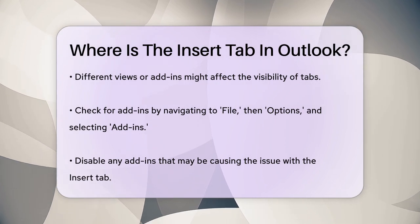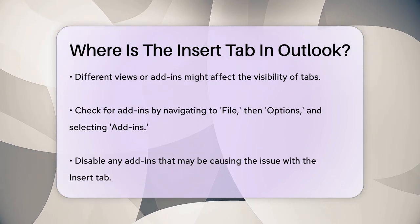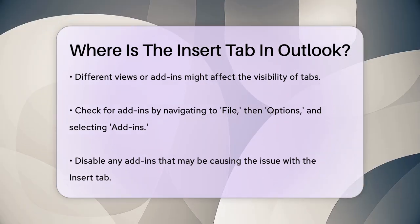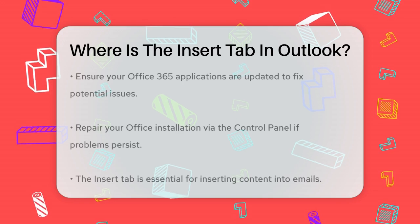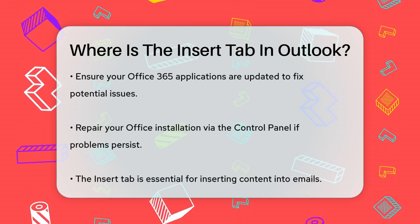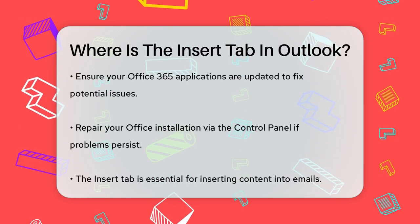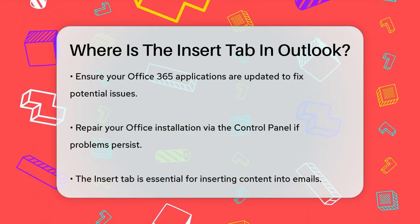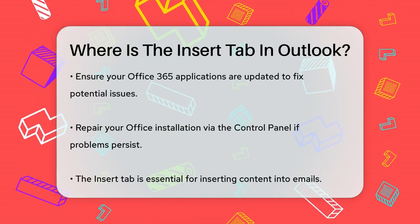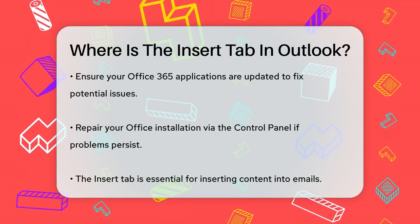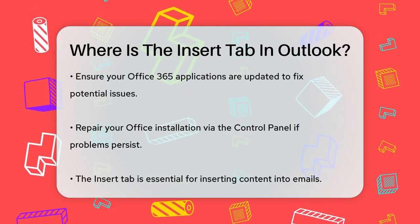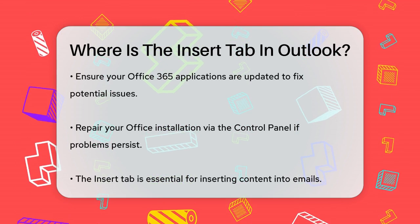If none of these steps work, it might be worth checking if your Office 365 applications are up to date. Microsoft frequently releases updates that can fix issues like missing tabs. You can also try repairing your Office installation through the Control Panel.